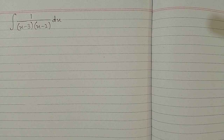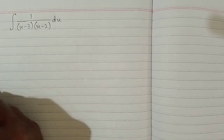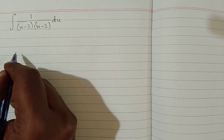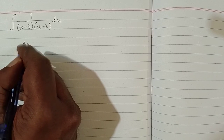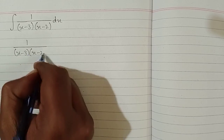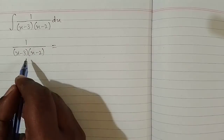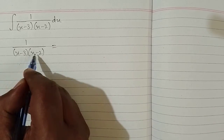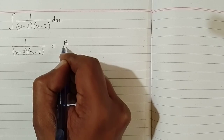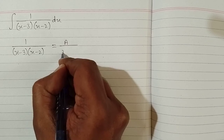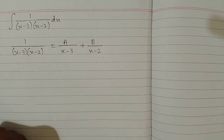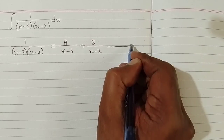In this video we will find the integral of 1 upon (x minus 3) multiplied by (x minus 2). This is a rational expression and this integral can be found by using partial fractions. We have two linear factors in the denominator, so we can decompose this fraction into two fractions: A upon (x minus 3) and B upon (x minus 2). Suppose this is the first identity.